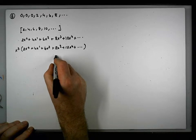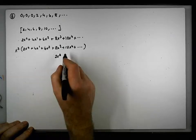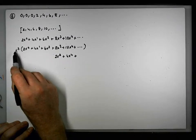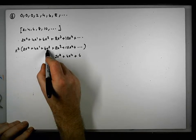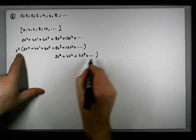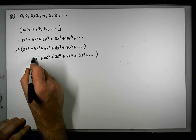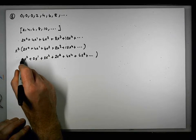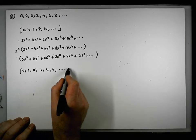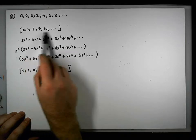x cubed times four x to the one gives four x to the four. x cubed times six x squared gives six x to the five, plus dot dot dot. We're missing the terms before this — there's no x squared term, no x to the one term, and no x to the zero term. So you can see this is encoding the sequence zero, zero, zero, two, four, six, and so on, which is effectively what we require.